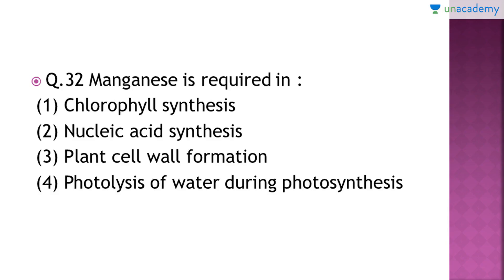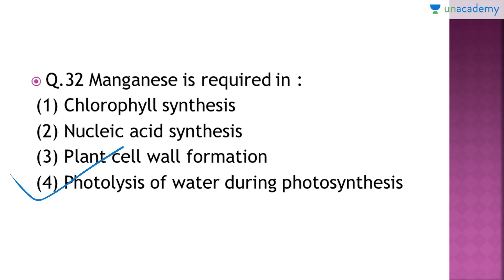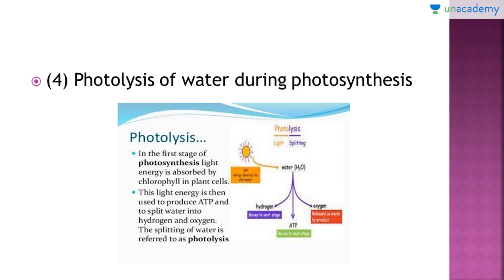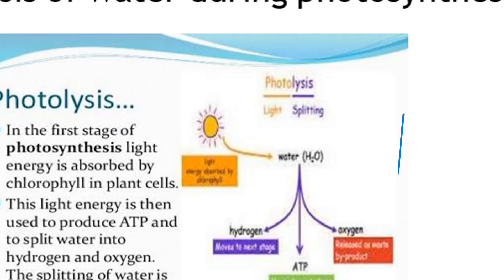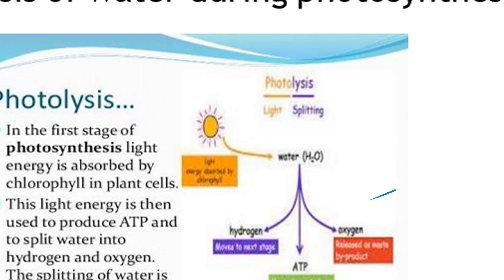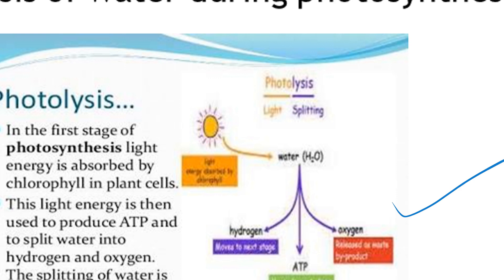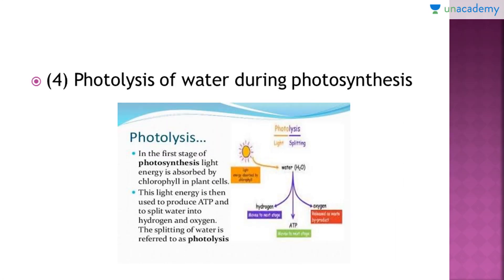Question number 32: manganese is required in which of the following? The correct answer is option number four — manganese is required in the photolysis of water during photosynthesis. Here you can see the diagram; this is the portion where photolysis is happening. In photolysis, the water molecule is broken down into hydrogen and oxygen, and ATP is liberated in the presence of manganese ions. The oxygen moves out of the cell as a byproduct, and hydrogen is used in forming a concentration gradient inside the mitochondria.